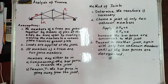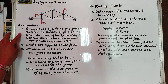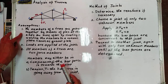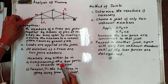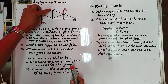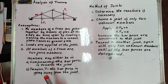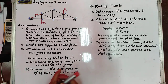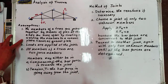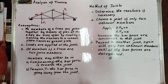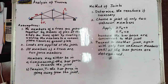What are the assumptions in analyzing a truss? First, the members of a truss are joined together by means of pins — there is a pin at each joint. Or more often, by riveting or welding the members to a common plate known as a gusset plate.